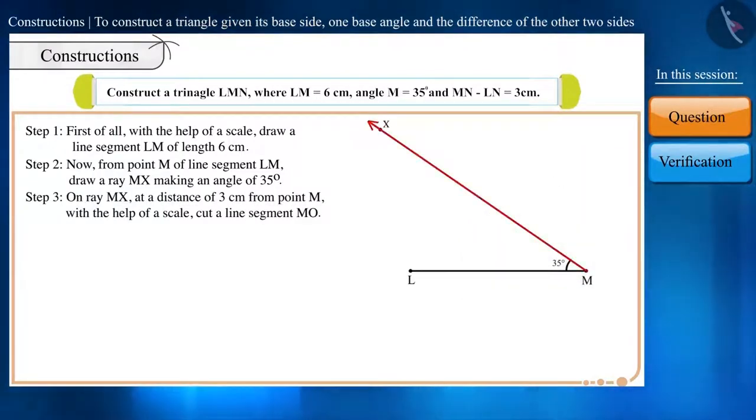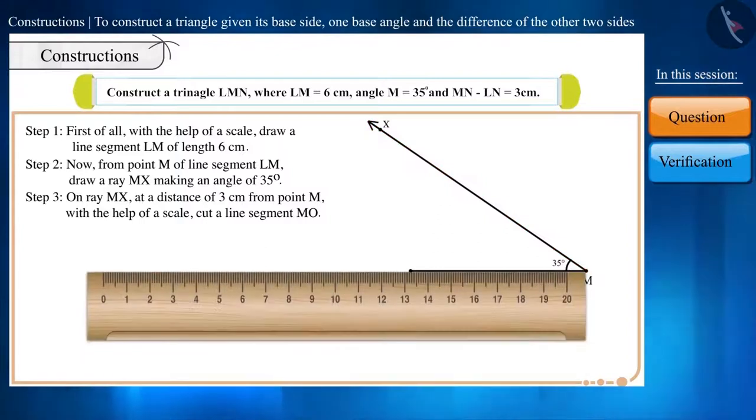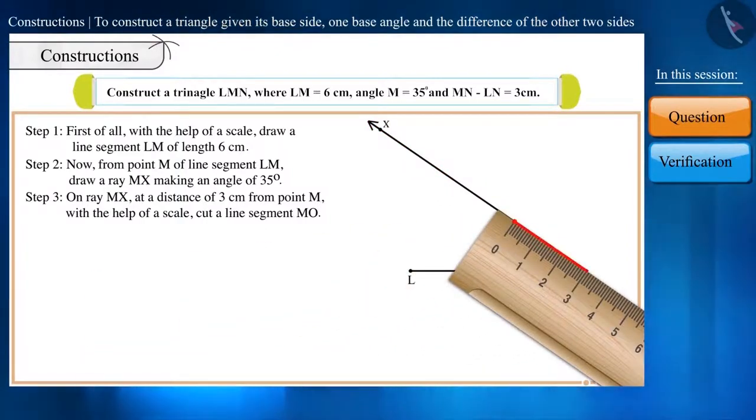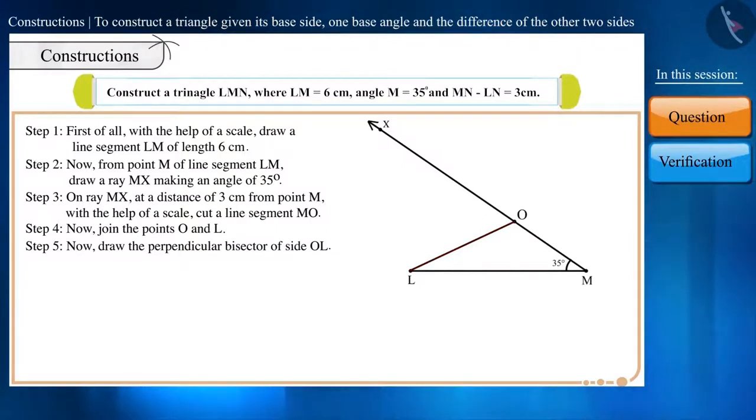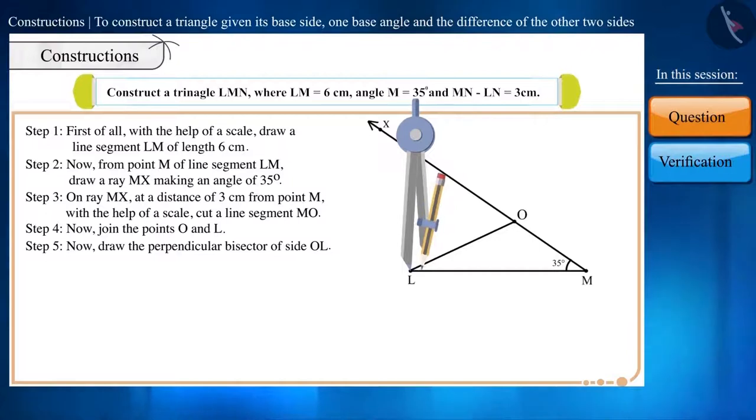Step 3. On ray MX at a distance of 3 cm from point M, with the help of a scale, cut a line segment MO. Step 4. Now let's join the points O and L. Step 5. We will draw the perpendicular bisector of side OL.